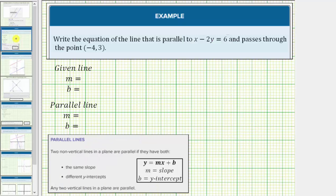So the first step is to determine the slope of the given line by writing the equation in slope-intercept form with the form y equals mx plus b, where m is the slope of the line.